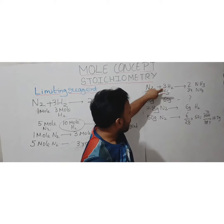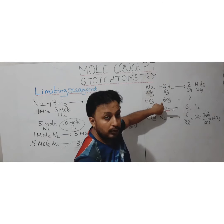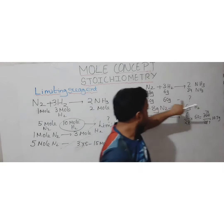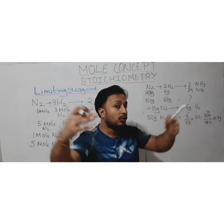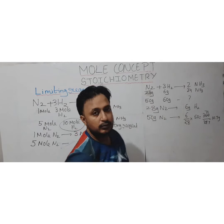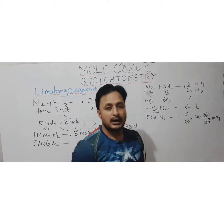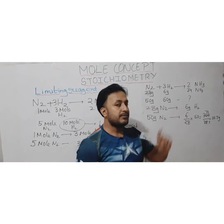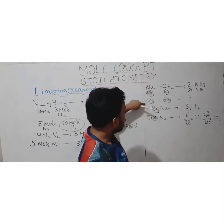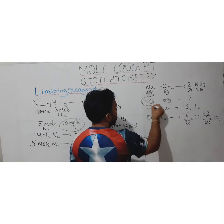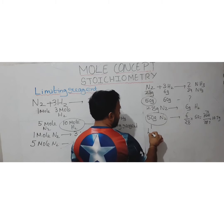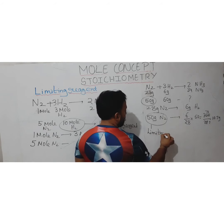The requirement is 10.7 g of H₂, but 60 g is provided — much more than needed. This means nitrogen will be consumed before hydrogen, and hydrogen will be left over. Therefore, nitrogen is the limiting reagent in this case.